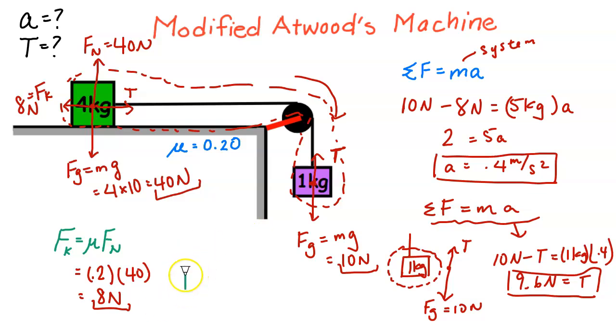So what I would have here is I would have my 4 kilogram block. I'm going to straighten it out. And then now I have a 1 kilogram block right here.